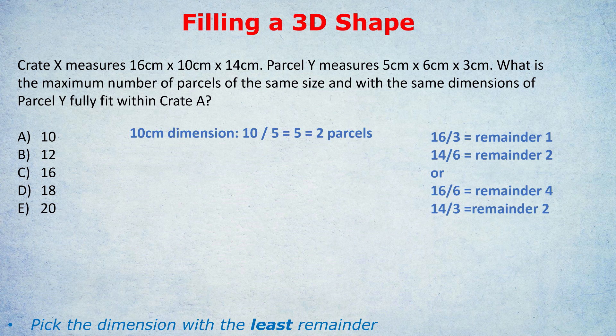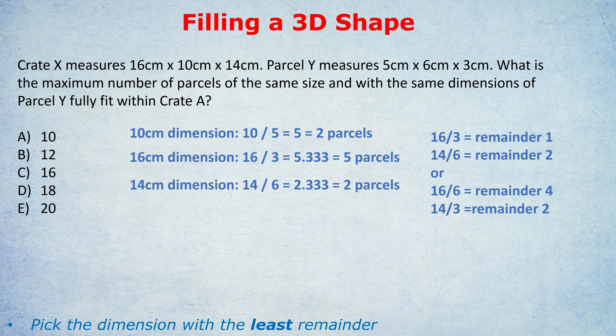And at the end, I'll show you how doing it the wrong way round with the bigger remainders leads to a much more inefficient solution. So if we did it the correct way with the least remainders, 16 divided by 3 is 5.3 recurring. So we can fit 5 parcels. And 14 divided by 6 is 2.3 recurring. So we can fit 2 parcels in that dimension. And of course, as before, we multiply the different answers. 2 times 5 times 2 is 20 parcels.